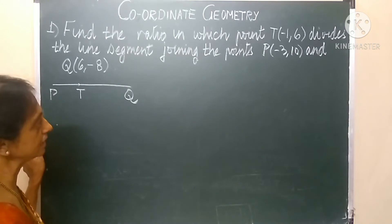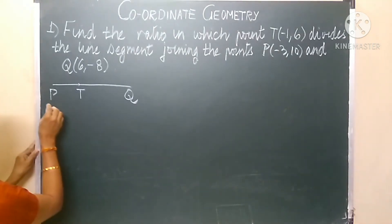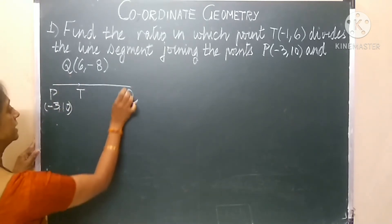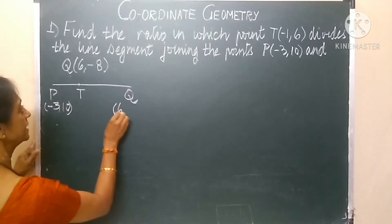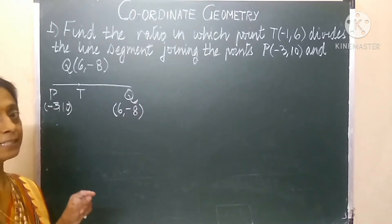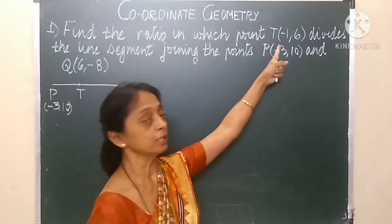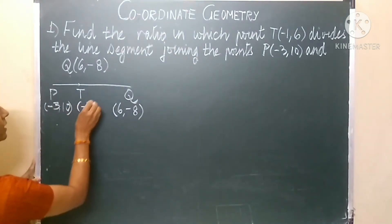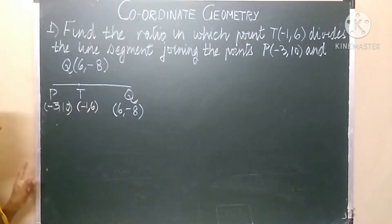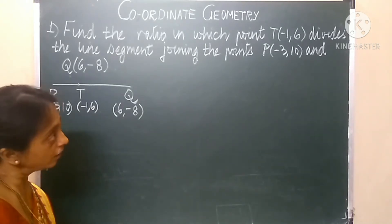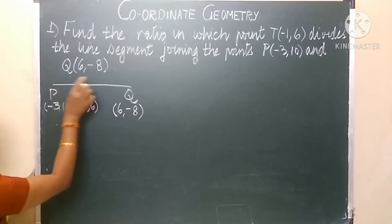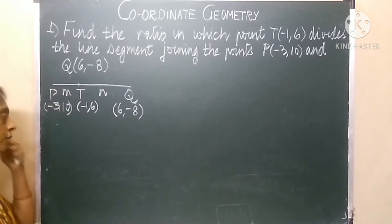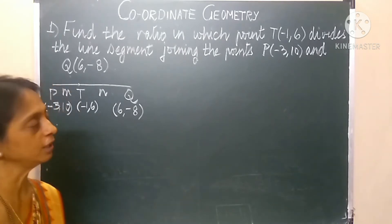What else is given in this problem, children? Point P, the coordinates are minus 3, 10. Point Q is given by 6, minus 8. The coordinates of point T are also given by minus 1, 6. What is asked over here? We have to find out the ratio. That is, M is to N are the unknown variables left to be calculated.